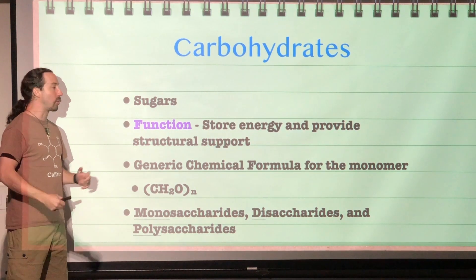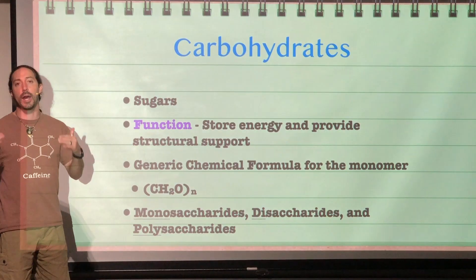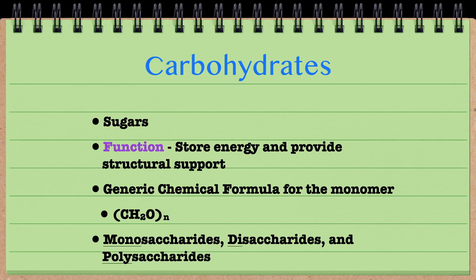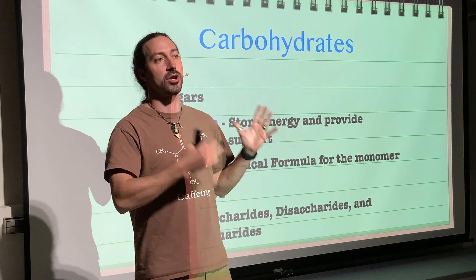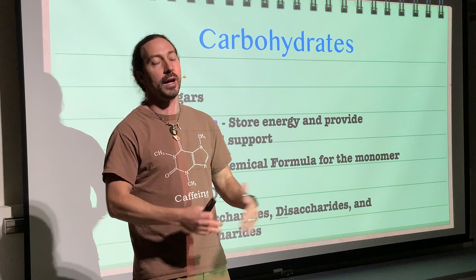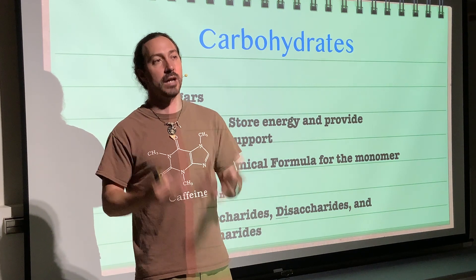The generic chemical formula for the monomer of a carbohydrate is CH₂O (n), where n is a variable. It just means you can have any number of carbons, hydrogens, and oxygens in this one-to-two-to-one ratio. The number of carbons and oxygens are equal, and the number of hydrogens will be double that.